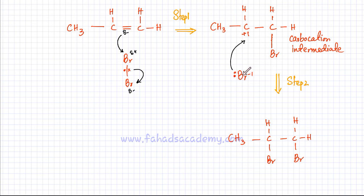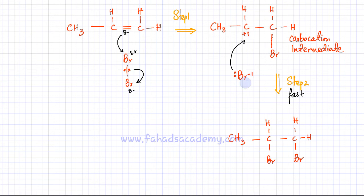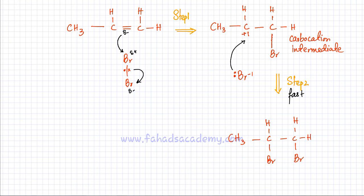The Br⁻ that broke away initially and carries the two electrons is then attracted to the positive carbocation and bonds with it, giving the final product where both carbons from the double bond have a bromine attached. This is a two-step electrophilic addition mechanism. Step two — the bonding of positive carbon and negative bromine — is the fast step, because the attraction is strong and activation energy is very low. Step one — polarization and heterolytic bond fission of Br₂ — is the slow step, requiring precise orientation and collision angle.